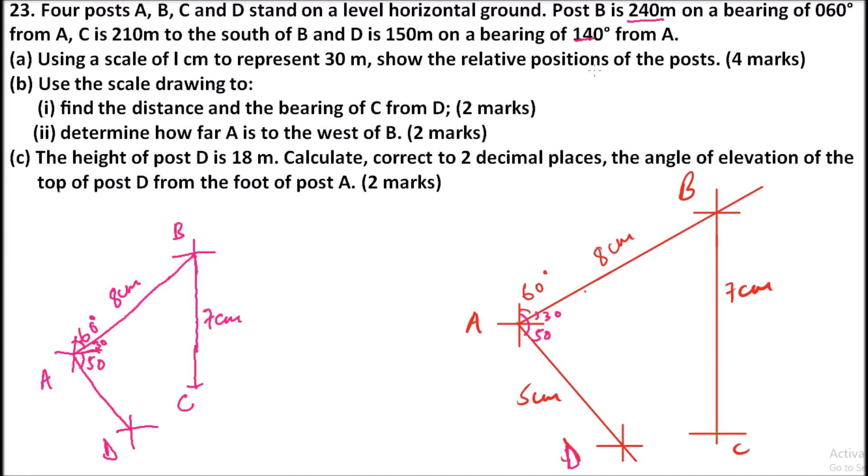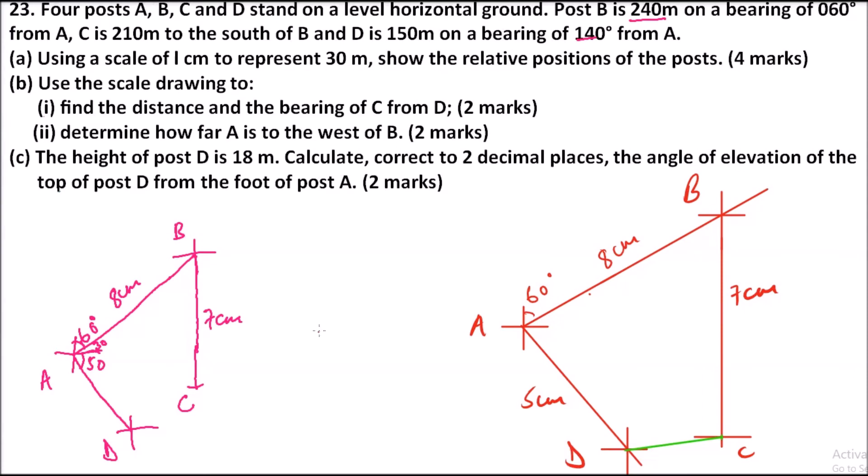With that we can go ahead and answer the other questions. Use your scale drawing to find the distance and the bearing of C from D. So what you do is to draw a line from D. Join D and C and measure the angle at D to get the bearing of C from D. So when I join D and C, I find that the bearing of C, that is B roman number one, my diagram is giving me 83 degrees.